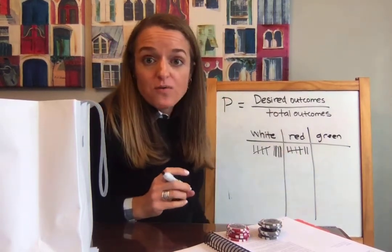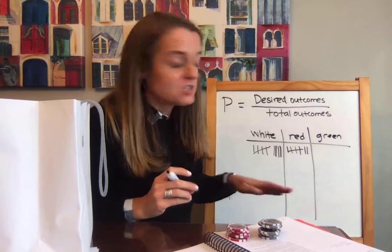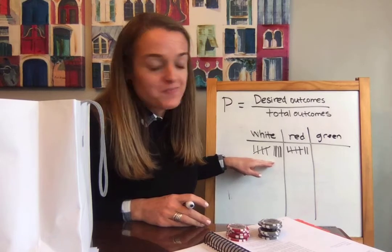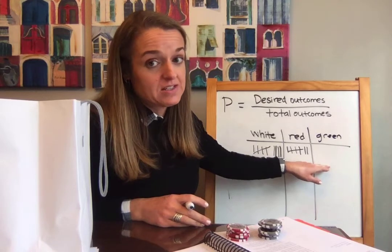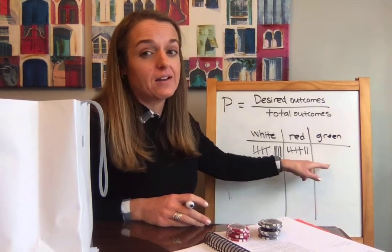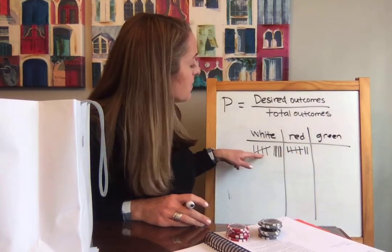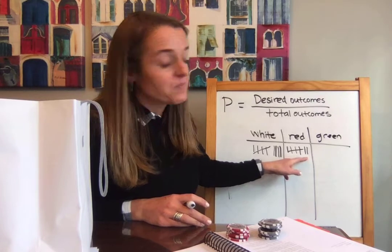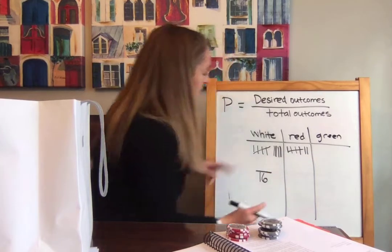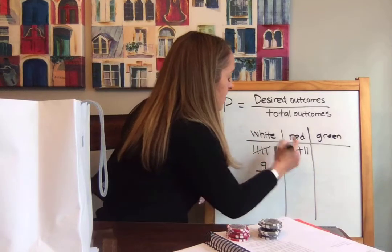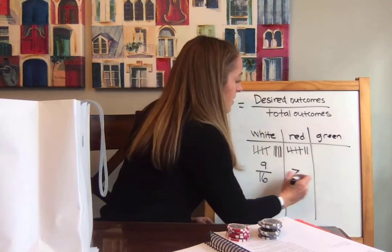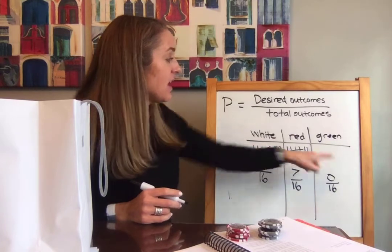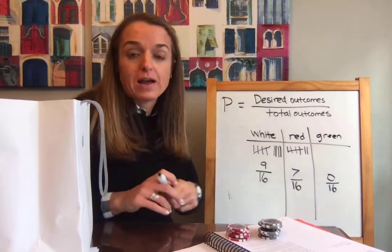Just based on our results so far, what color candy do you think there are more of? So far we have nine whites, seven reds, and zero greens. Now, I showed you green — you know that there's green in the bag — but we have now drawn 16 pieces of candy. Out of 16 pieces of candy, nine of them are white, seven are red, and zero are green so far. Your guess is probably that there are more whites than anything, and the least amount of green in the whole bag. Let's go around some more.